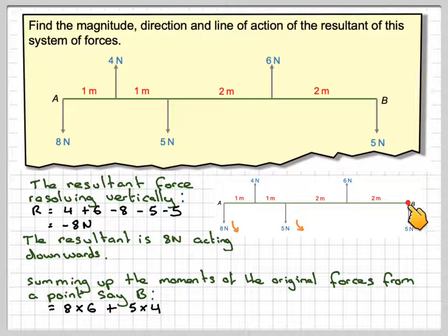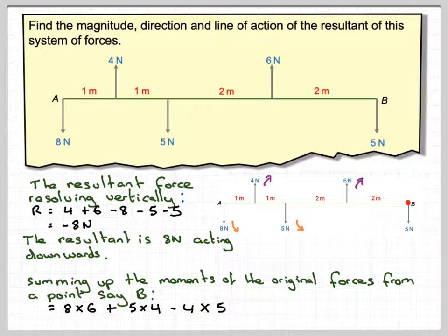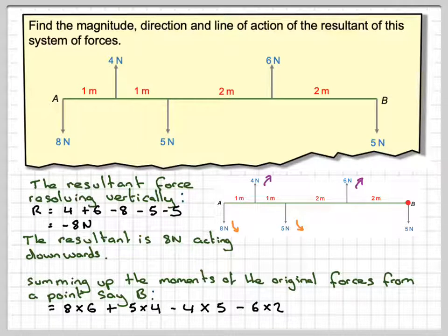Now we don't have to worry about this one because it's got no distance from B and therefore going in the clockwise direction. So we're going to have the four newtons times two plus two plus one, which is five minus four times five. And then this six newton one, which is going to be two times six newtons, six newtons times two. Now, if we work that out, we're going to get 36 newton meters.